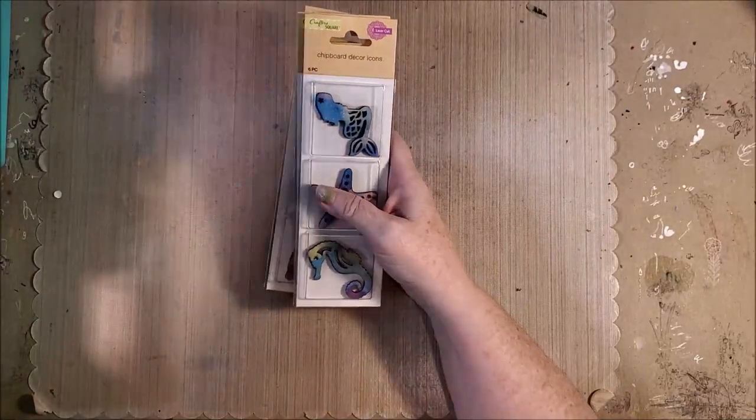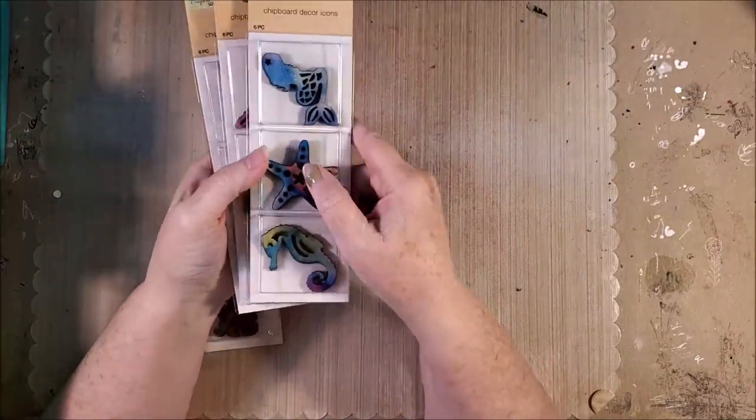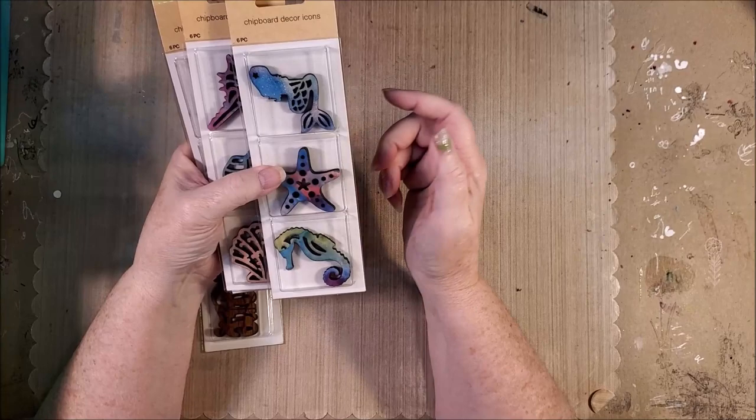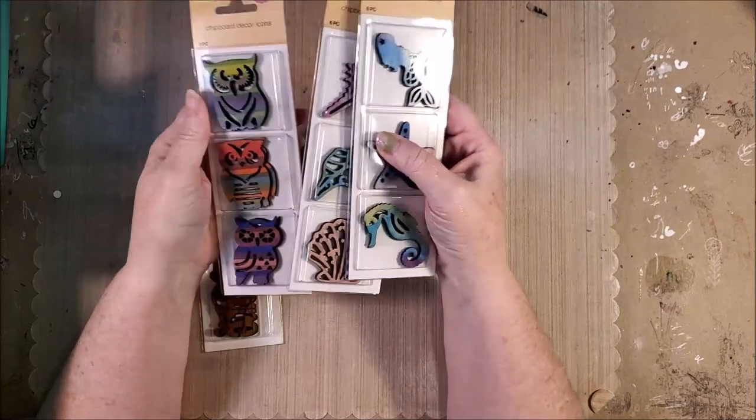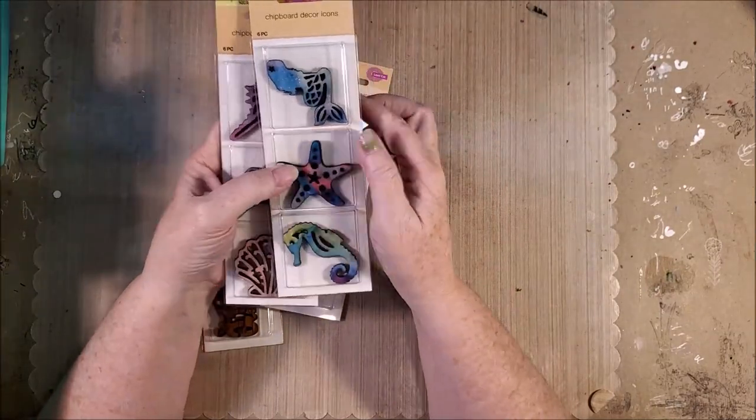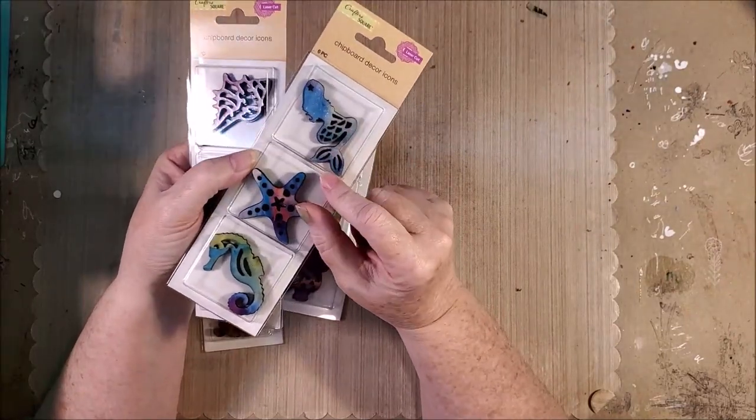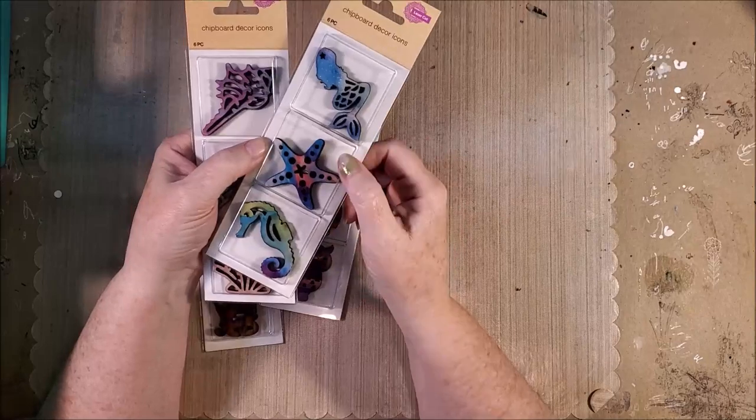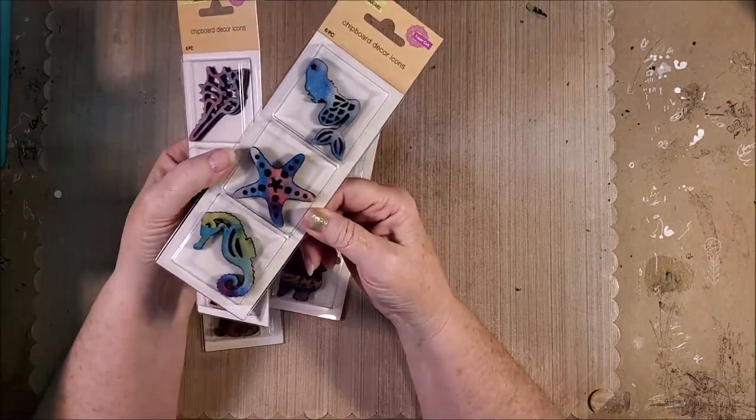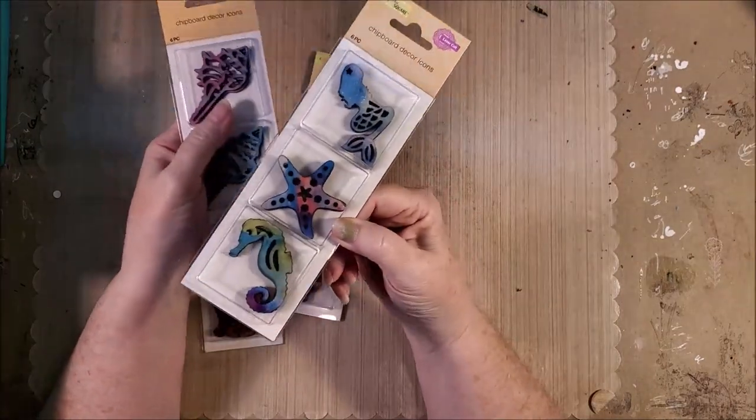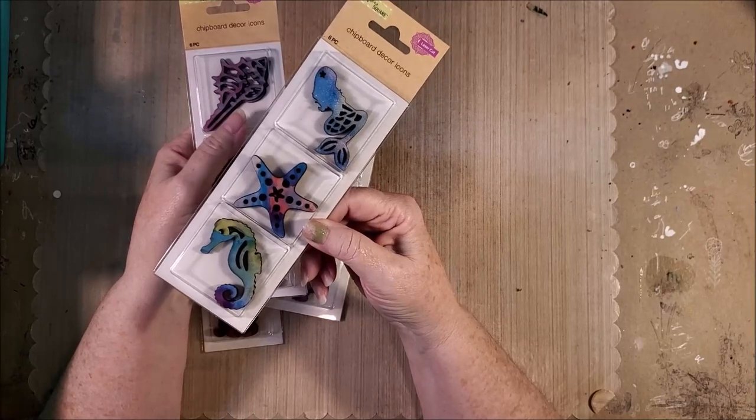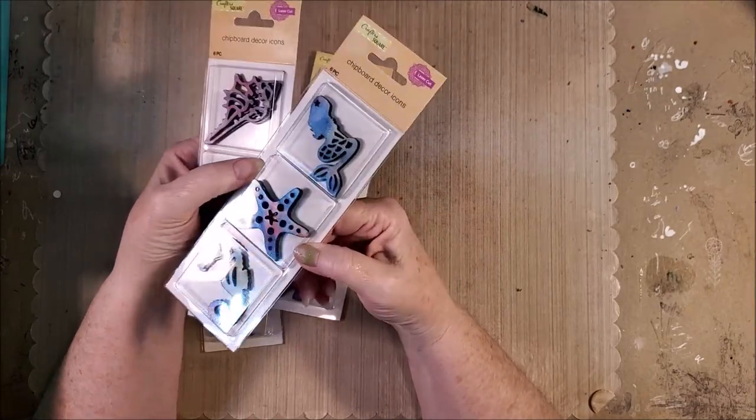Then I found a few more of these things that are a little different. And I'm collecting things for mermaid journals. So there was the mermaid, the star, and I love seahorses, always have. But these are the colored ones instead of just the cardboard colored ones.